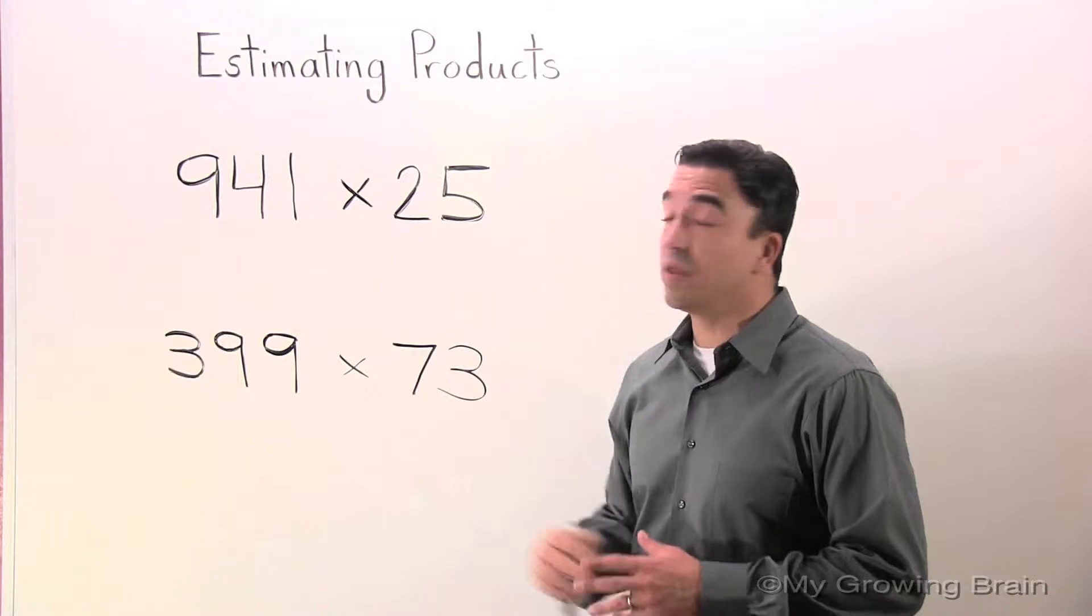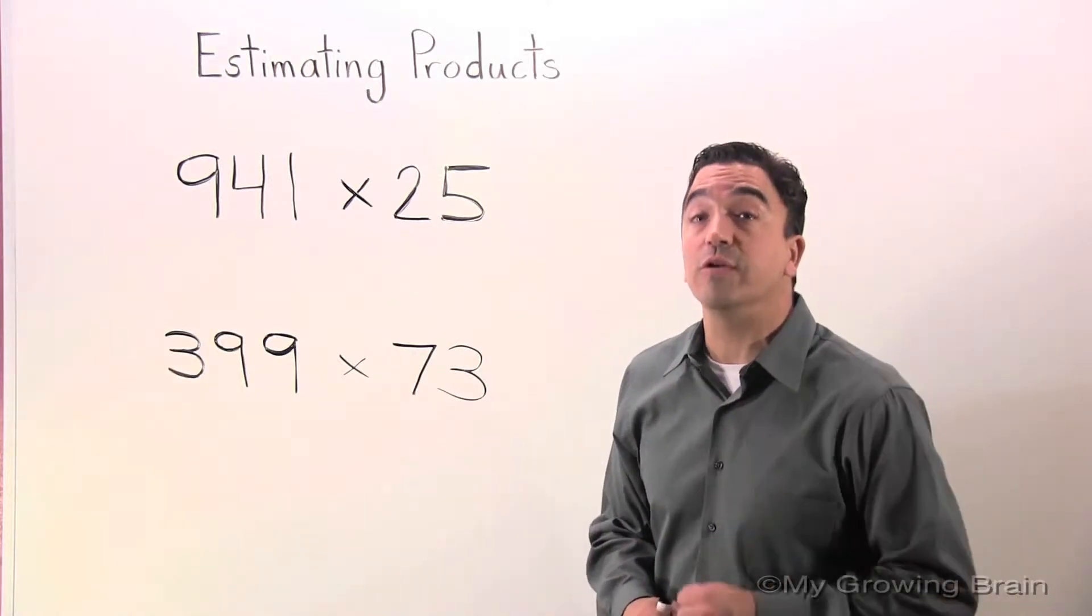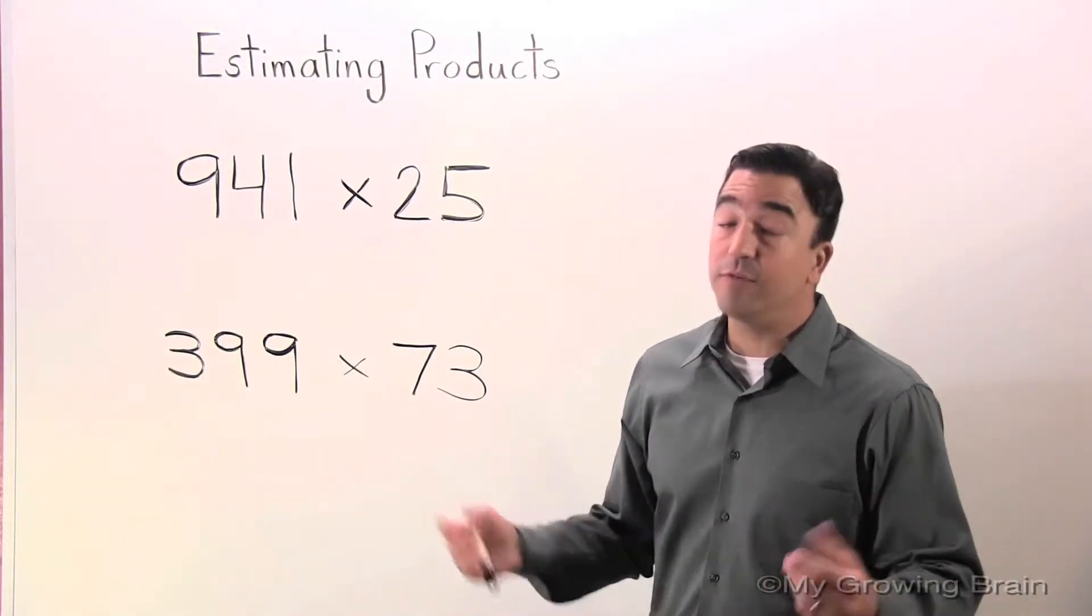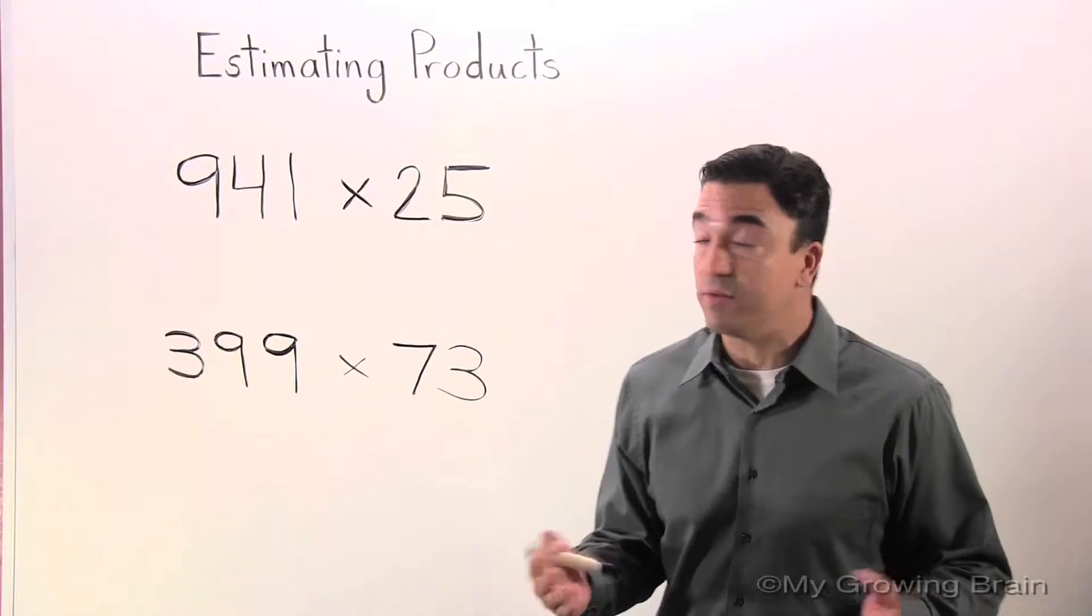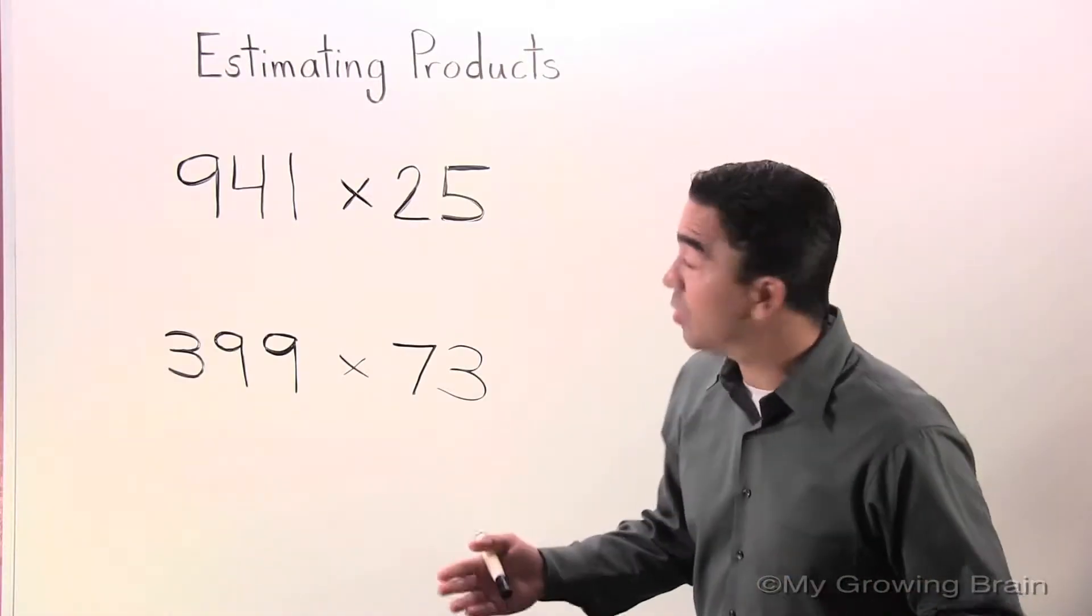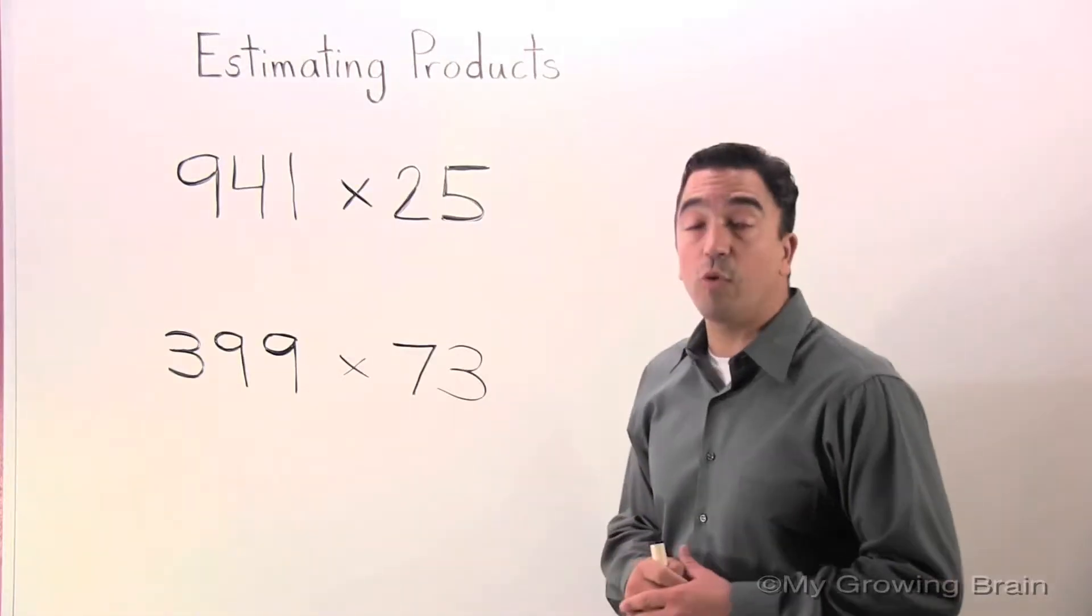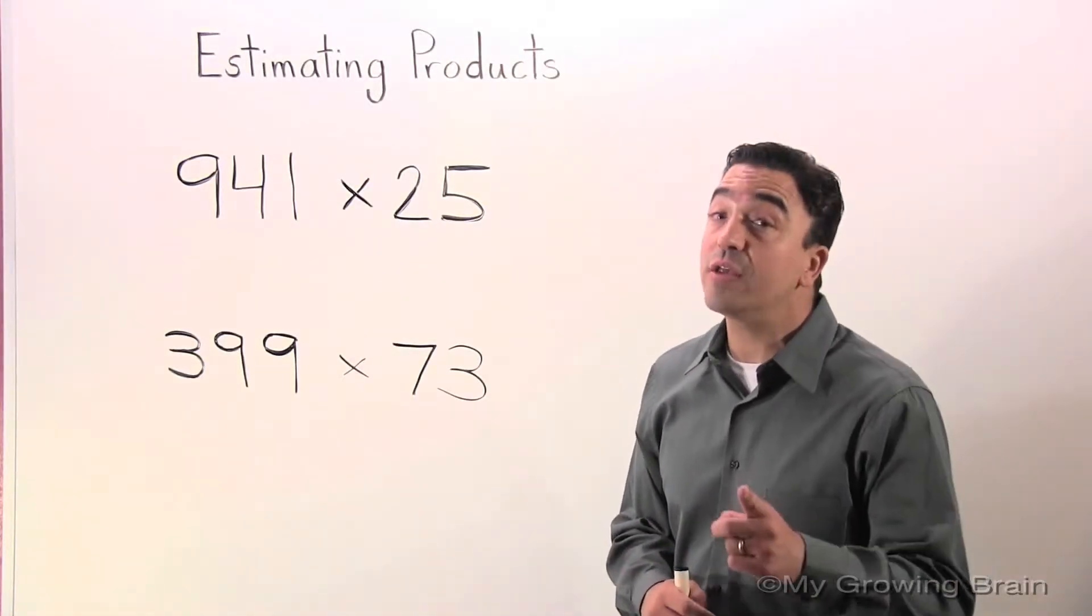I'm going to round 941 to the nearest hundred. Now, if you're having difficulty with rounding, please go back to one of our previous lessons. Here we go. I'm going to round 941 to the nearest hundred, which is 900.